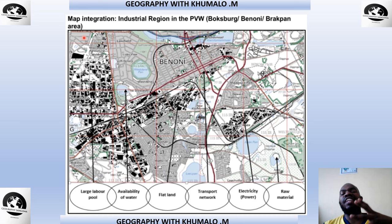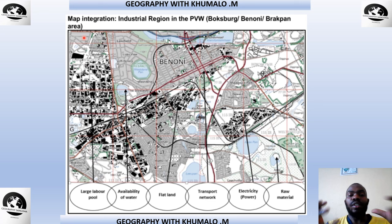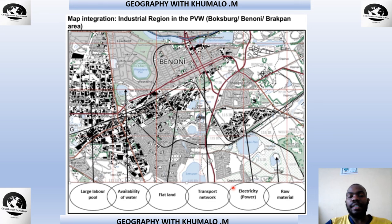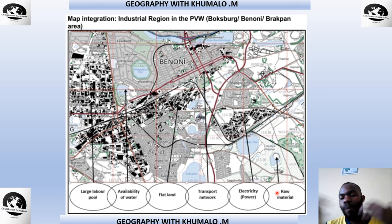This topic will be integrated with map work in Paper 2. On a topographic map, a large labor pool is shown by many settlement shapes and houses. Water availability is shown by dams and rivers. Flatland is shown by gentle slopes. Transport network is shown by roads, railways, and aerodromes. Electricity is shown by power lines. Raw materials are shown by diggings, mining symbols, and cultivated lands.